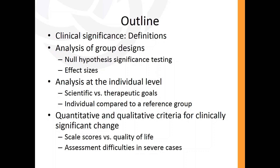At the individual level, we're more concerned about therapeutic goals — how is this one individual doing compared to everybody else, not how is this group doing compared to this other group. For scientific and research purposes, you're often concerned about the overall efficacy of a treatment. But for individuals, we're more concerned about their therapeutic outcomes. It's really more about comparing an individual to some reference group, and there are all kinds of options depending on your goals and the client's goals.